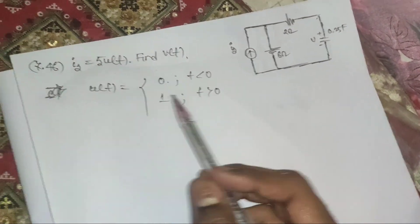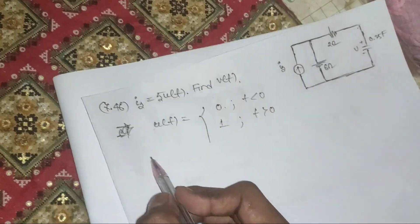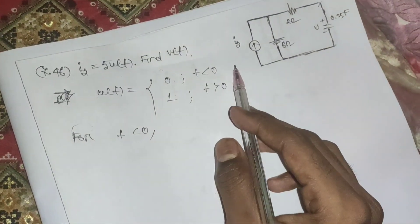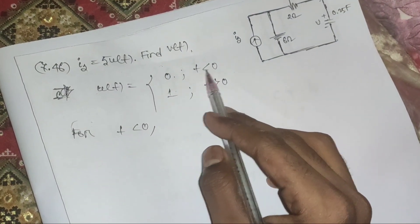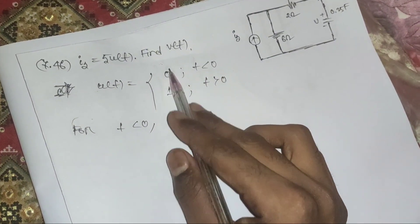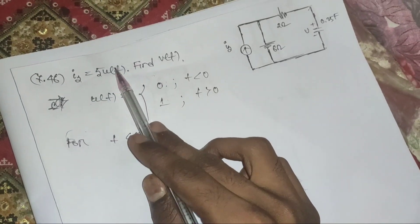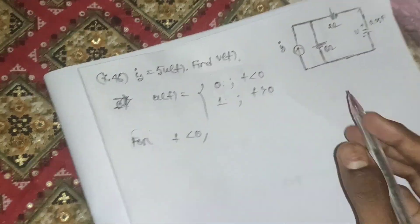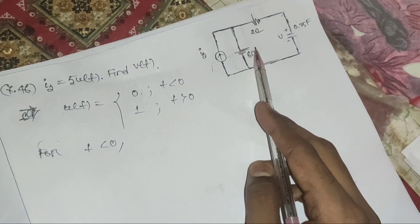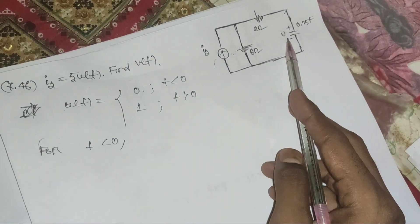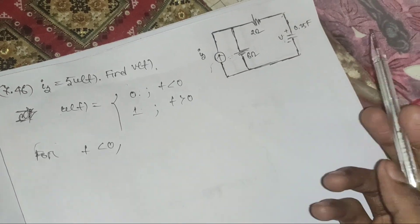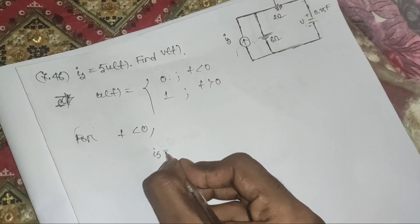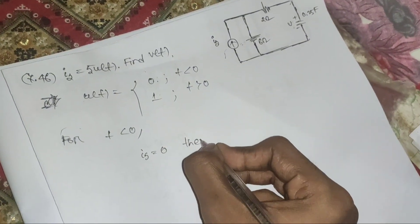For t less than 0, the value of u(t) is 0, so the current source is 5×0 = 0 amperes. If the current in the whole circuit is 0, then the voltage is obviously also 0 — there is no current source, so there will be no voltage. Therefore v(0) equals 0.